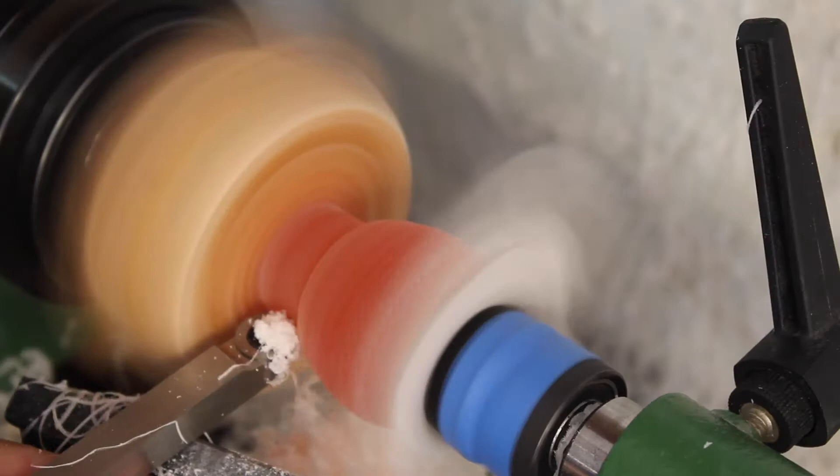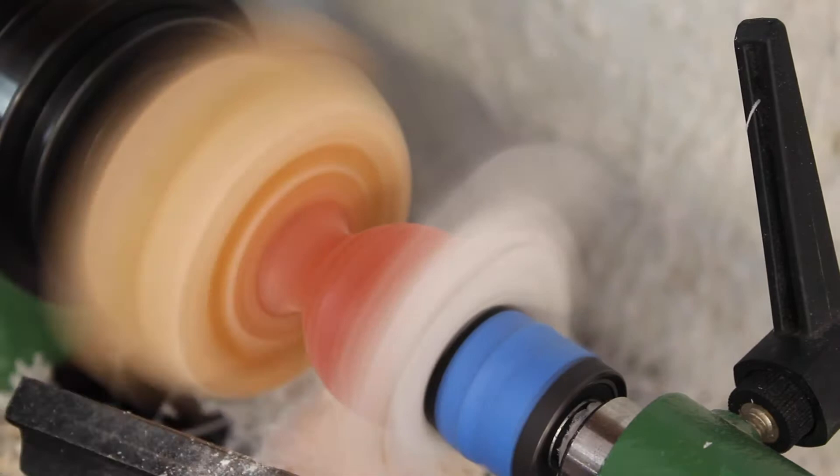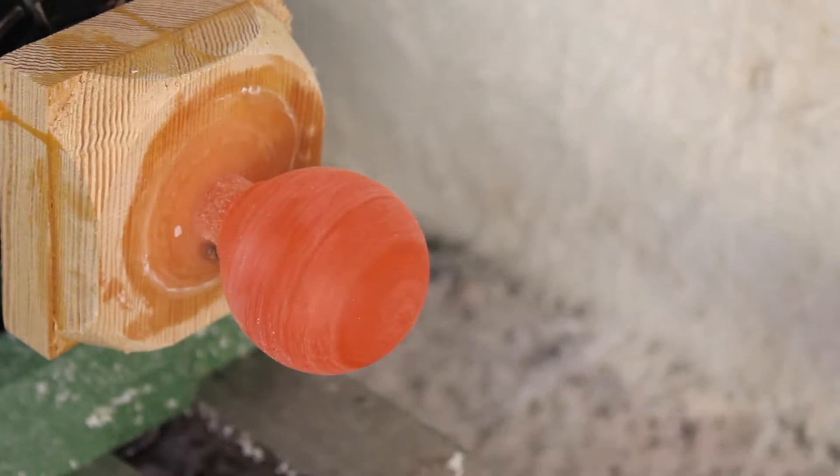Here I switched to a red round tip carbide scraper so that I could round out the ball shape a little bit more. This scraper was a little bit more, it was like 50 bucks. Now we get to the sanding. Of course, you want to start at a lower grit and then move slowly to a finer grit.